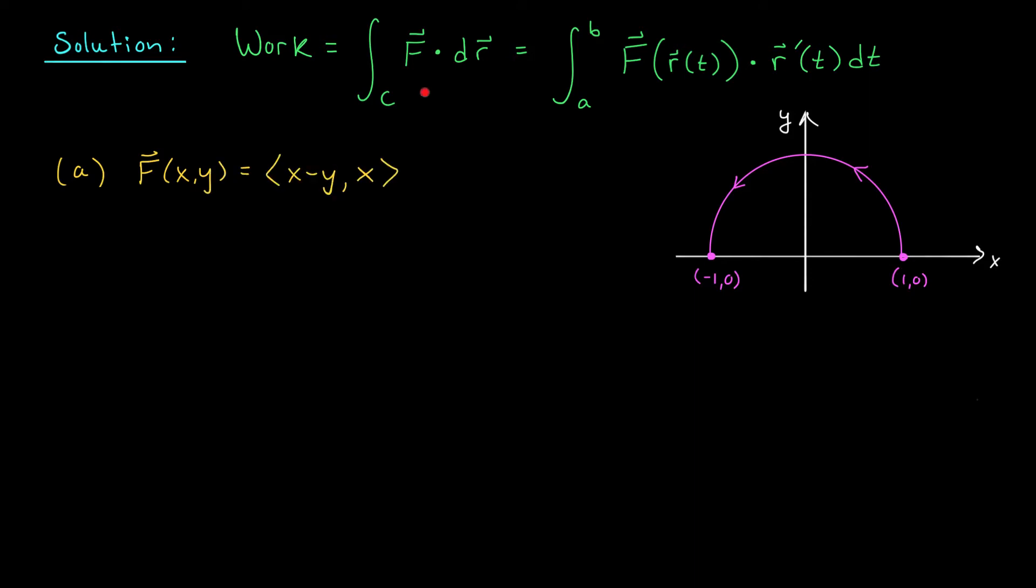We're going to need to know the curve C. Well, in this case, we're told that we're moving along the upper half of the unit circle. And we're also going to need to know r. Remember, r(t) is the parametric equation that traces out the curve C. So in this case, since we're dealing with the unit circle, I think we could use r(t) = <cos t, sin t>. Of course, since we're only going along the top half of this circle, we should restrict t from 0 to π. Okay, I think we have everything we need.